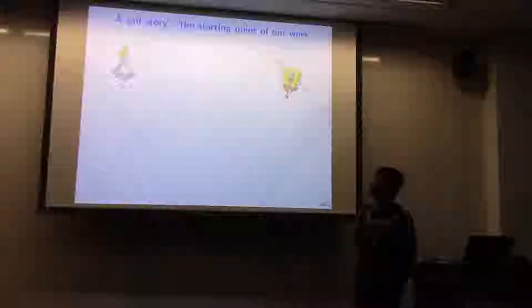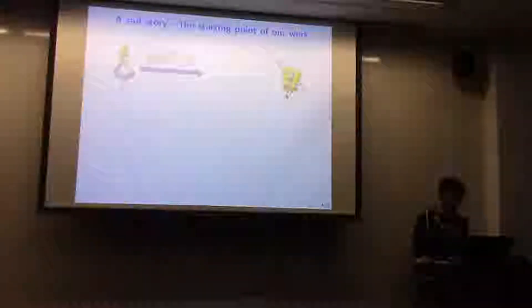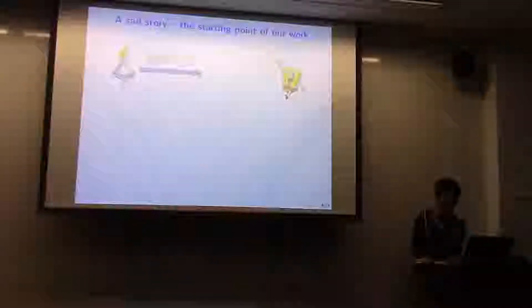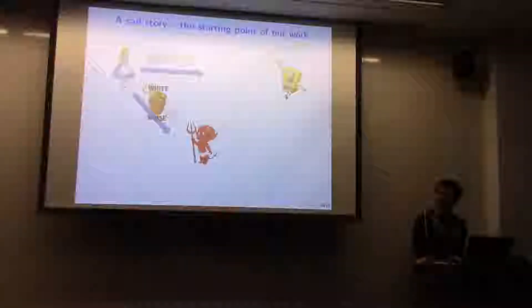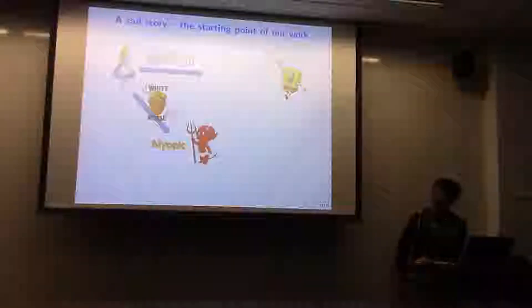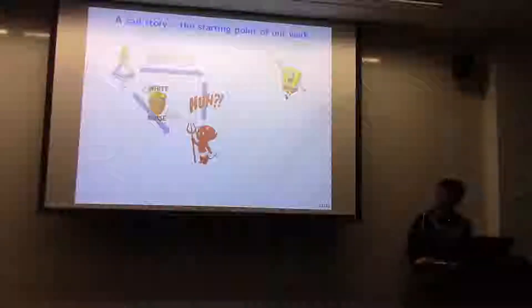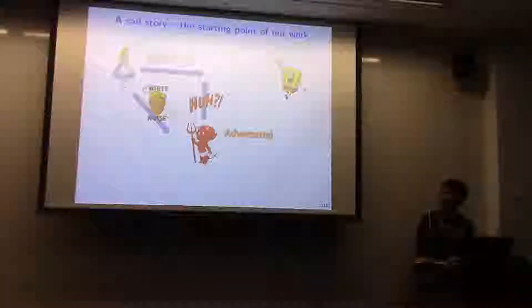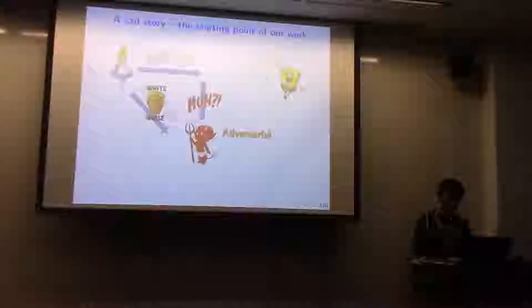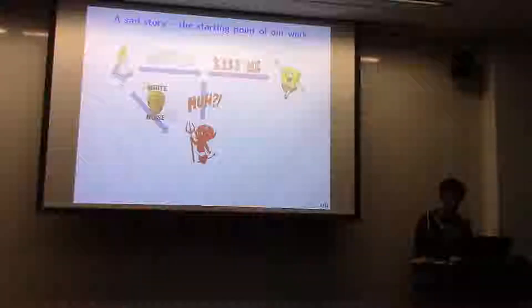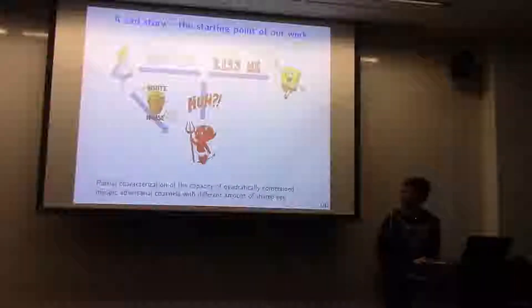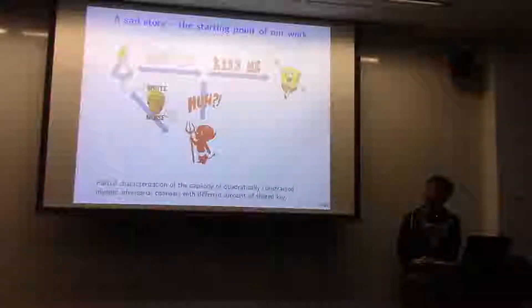So what is quadratically constrained myopic adversarial channels? Let's say Alice wants to send some message to Bob. Unfortunately, this message can also be viewed by some bad guy, but in a noisy manner — namely some white noise is added to the message, so that's why we call him myopic. And based on his noisy observation, he will carefully design noise and jam the communication from Alice to Bob, that's why we say he is adversarial. Let's call him James, because he can jam the channel adversarially. Bob receives some adversarially corrupted version of the message and wants to figure out what Alice wanted to say originally.